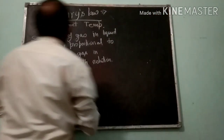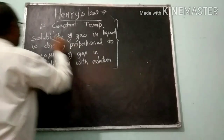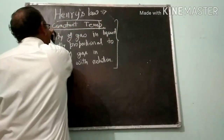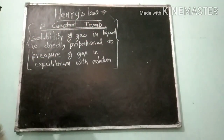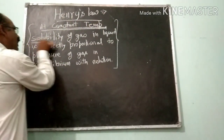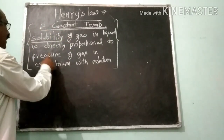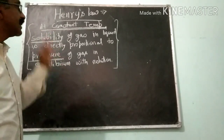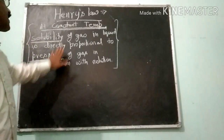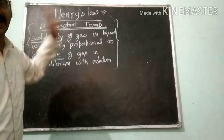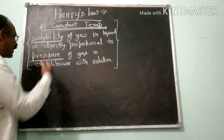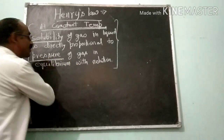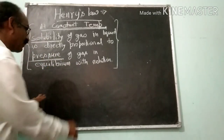The statement can be written like this: if we keep the temperature constant, the solubility of gas will be directly proportional to the pressure. So solubility is proportional to pressure at constant temperature. Here in the statement we are saying that pressure of gas is in equilibrium with the solution.